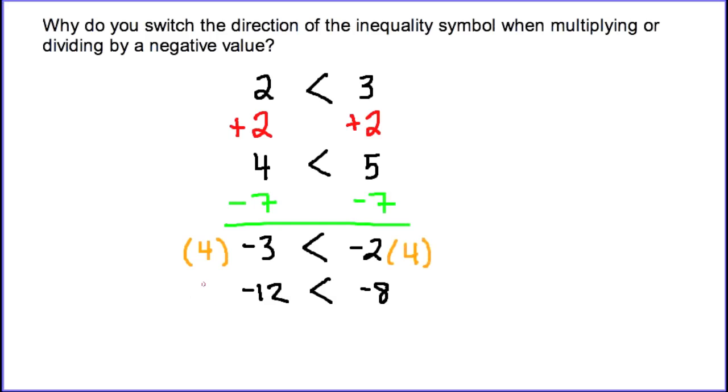Now let's multiply by a negative to watch what happens. We're going to multiply by negative 2 on the left and by negative 2 on the right. When we do this, negative 2 times negative 12 is 24, and negative 8 times negative 2 is 16.